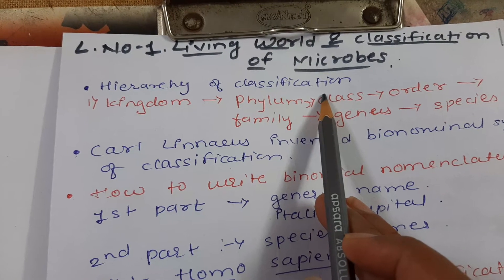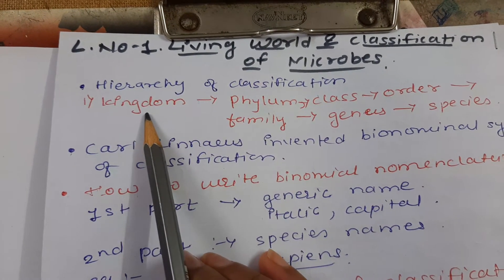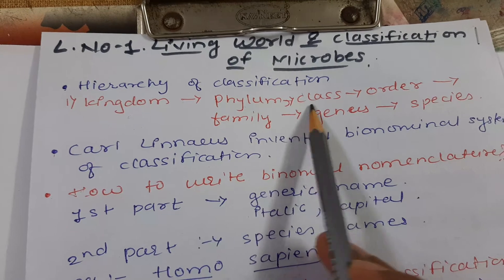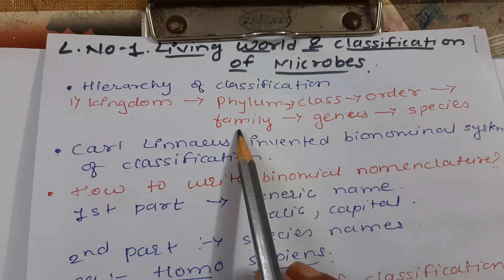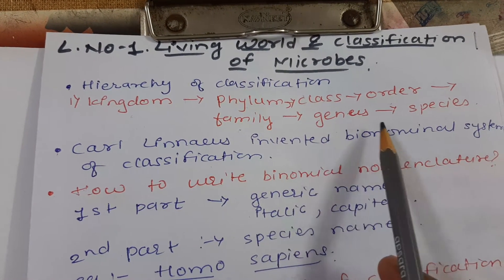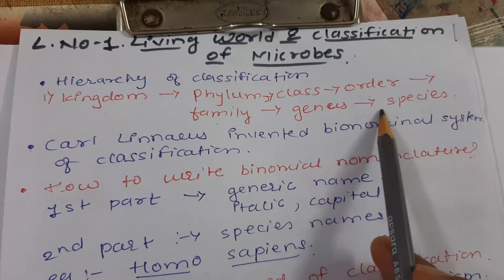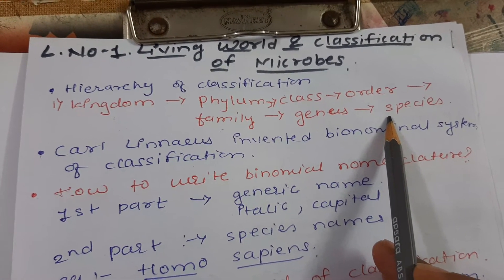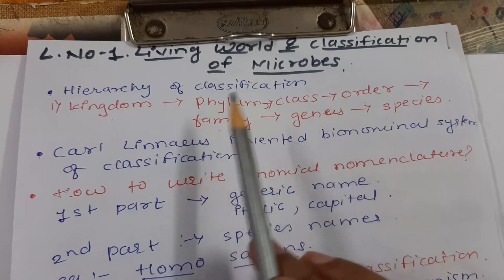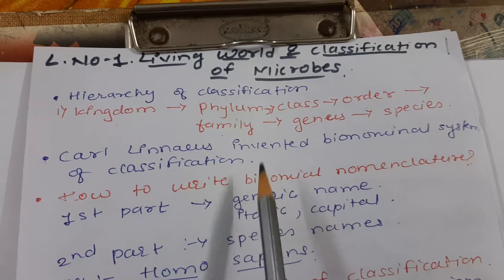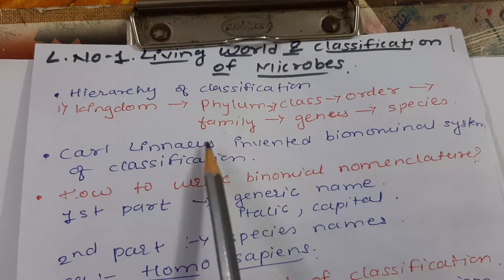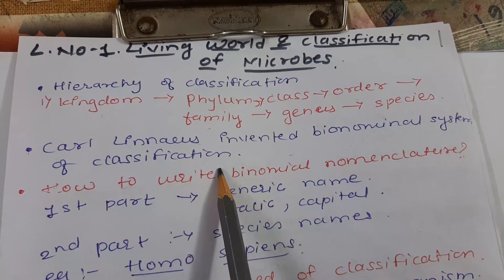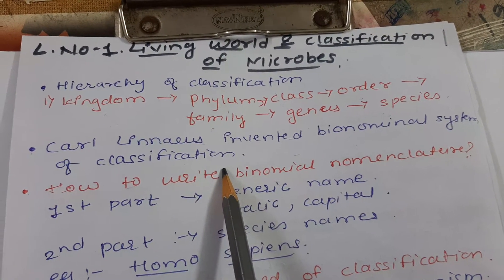This classification is called the hierarchy of classification. It is based on Kingdom, Phylum, Class, Order, Family, Genus, and Species. The binomial system of nomenclature was invented by Carolus Linnaeus.